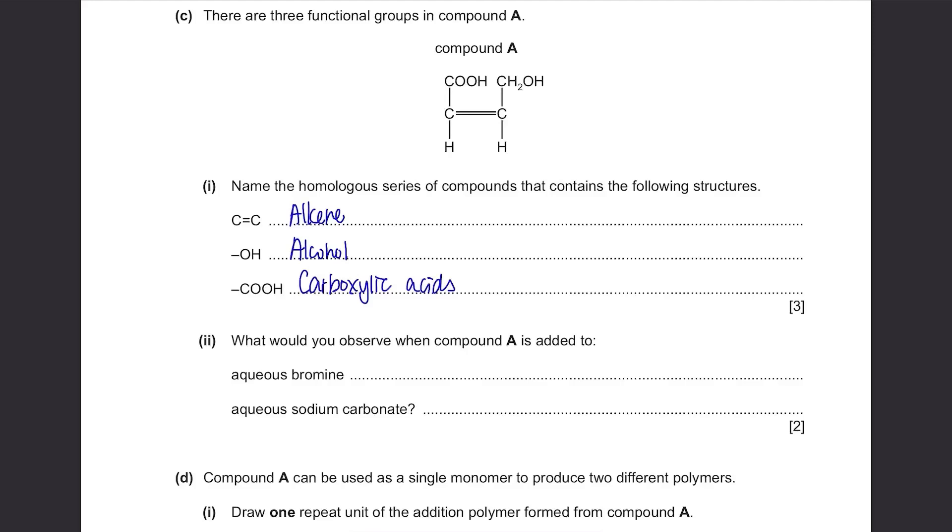What would you observe when compound A is added to aqueous bromine? Bromine turns colorless from brown when alkene is present. Since we have alkene here, it will turn colorless. When aqueous sodium carbonate is added, if you add metal carbonate to carboxylic acids, CO2 gas will be produced. But instead of writing carbon dioxide gas produced, you just need to write what you observe. So write that there are bubbles produced, or there is fizzing, or there is effervescence.